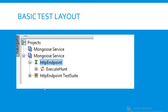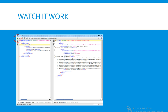This creates the basic test layout as seen by expanding the tree and double clicking the request. You can see a stepped out request with comments that help you fill it in. Fill in the blanks and click the green play button to watch it work.